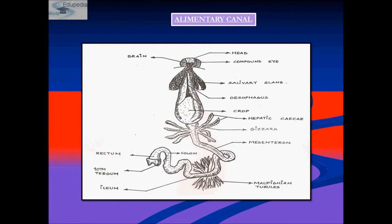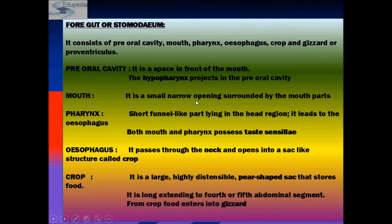The alimentary canal consists of three major portions: foregut, midgut, and hindgut. The foregut is also known as the stomodium. It consists of a mouth surrounded by mouth parts, and the mouth cavity is called the pharynx.